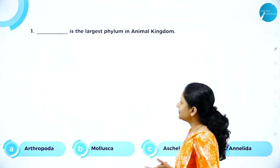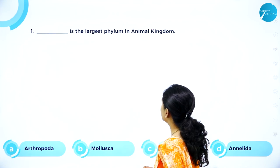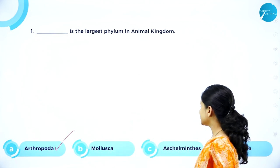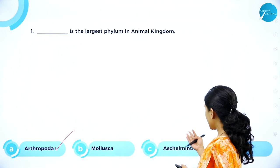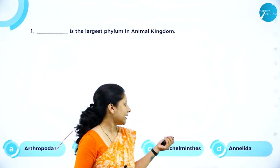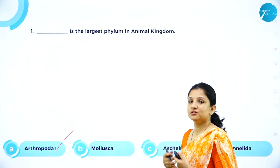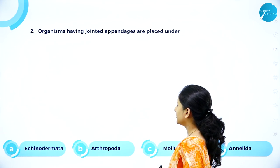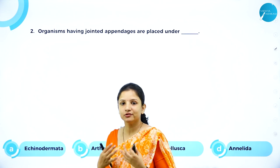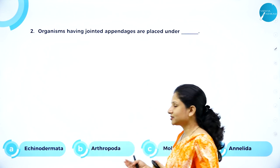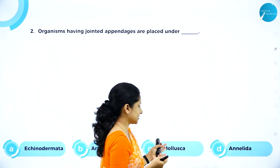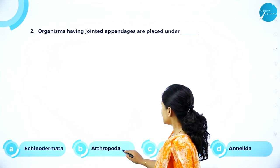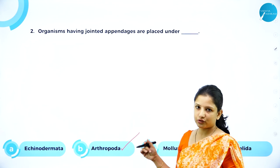MCQ: Dash is the largest phylum in the animal kingdom. The answer is Arthropoda, because arthropoda comprises insects, which are the most numerous. Mollusca includes oysters and octopuses; Aschelminthes includes roundworms; Annelida includes leeches with metameric segments. So the right answer is Arthropoda. Next MCQ: Organisms having jointed appendages are placed under which phylum? Echinodermata is for organisms with spines; Mollusca for organisms with a visceral hump; Annelida for organisms exhibiting metamerism. The right answer is Arthropoda — arthro means joint, poda means feet.